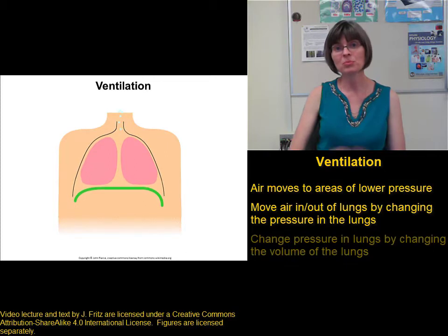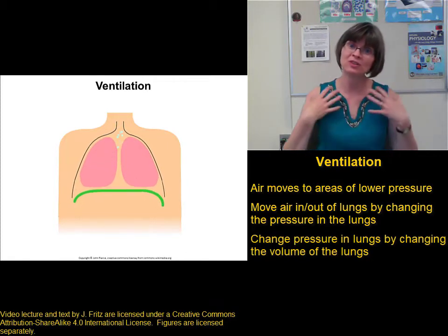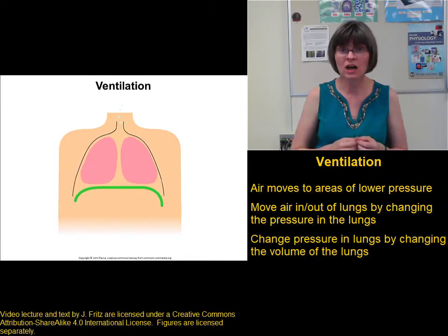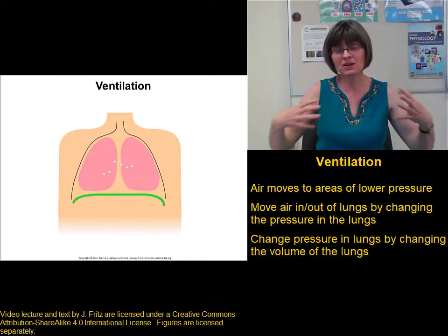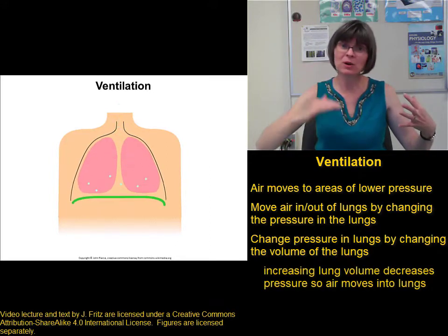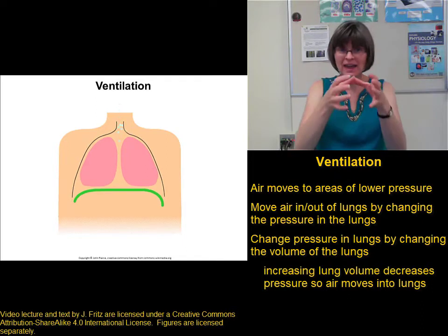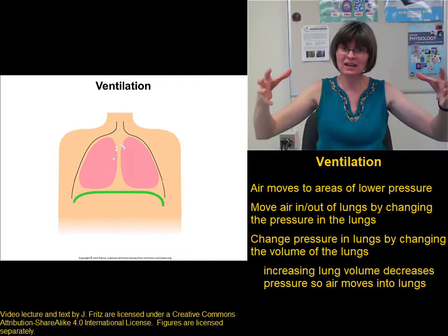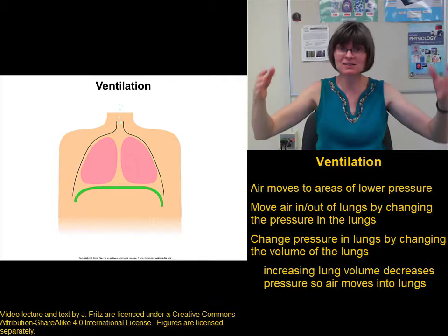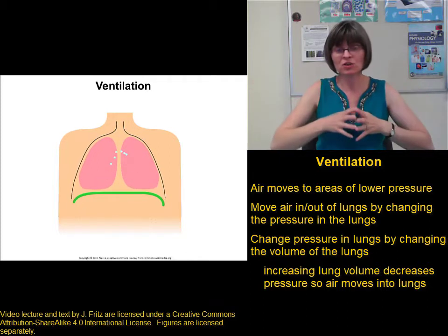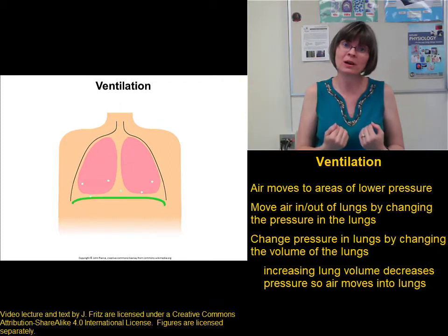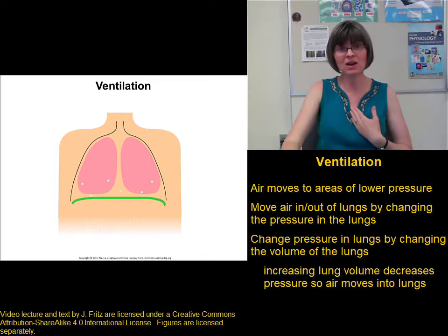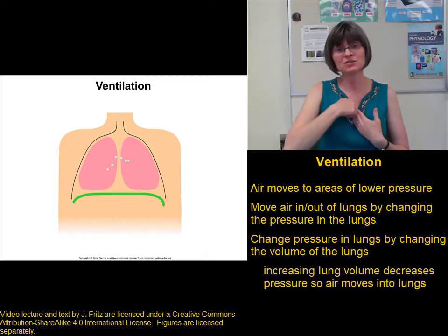The way we change the pressure in our lungs is by changing the volume of our lungs. Because of Boyle's Law, if we make the volume bigger, that makes the pressure go down. Imagine if I had a small box full of air, and then I put that same amount of air into a bigger box — it's going to be under less pressure. So if I make my lungs bigger, the pressure in my lungs goes down, and the low pressure draws air into my lungs.